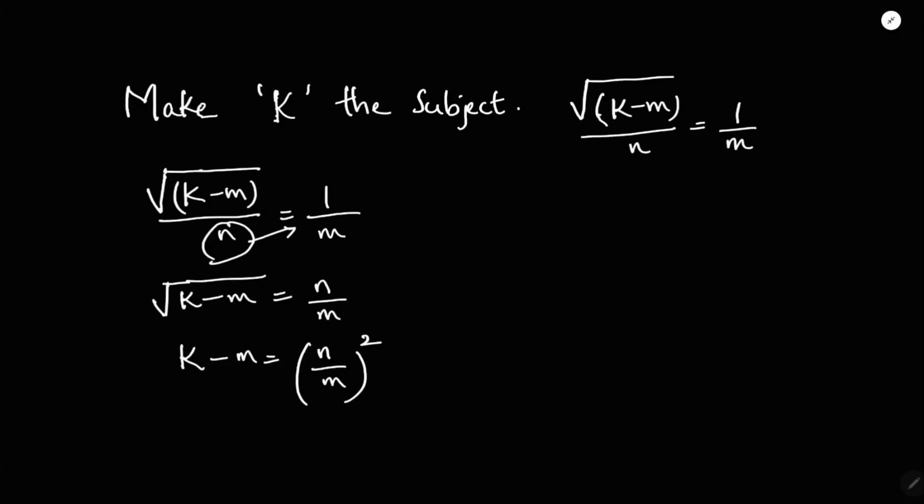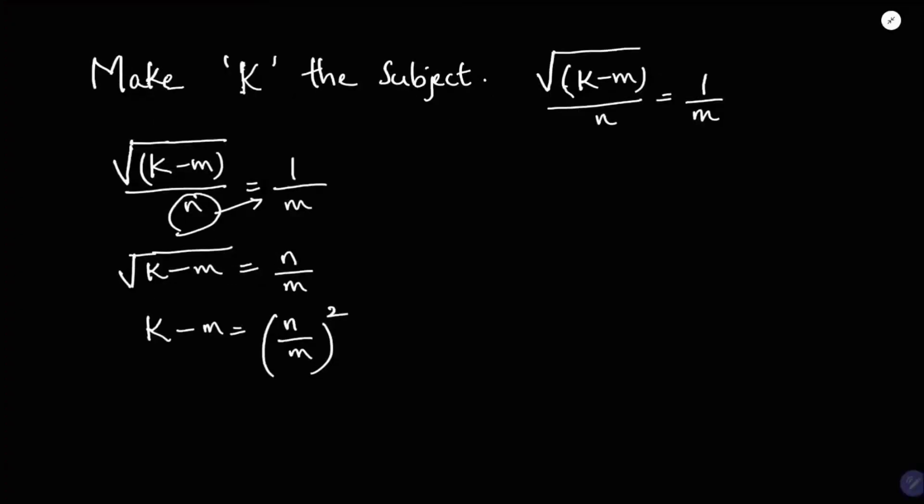Or you can say squaring on both sides. K minus m equals k minus m equals n square by m square.